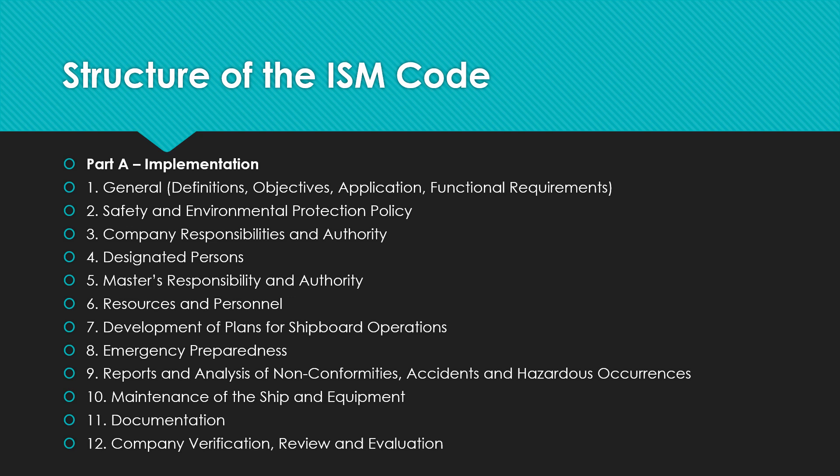The final section of Part A — implementation — covers company verification, review, and evaluation. The company is required to carry out internal safety audits to verify whether safety and pollution prevention activities comply with the safety management system. The audits and any corrective actions should be carried out in accordance with documented procedures.